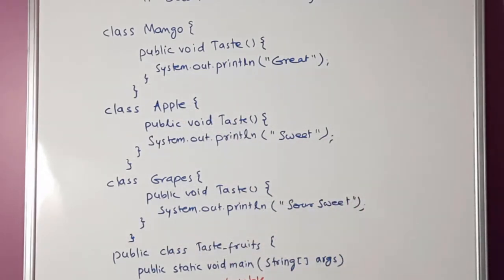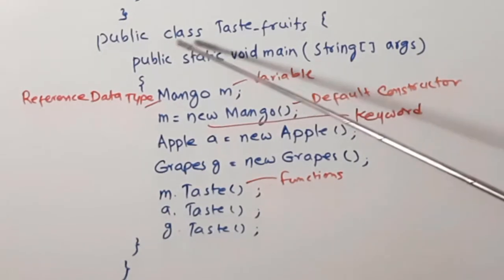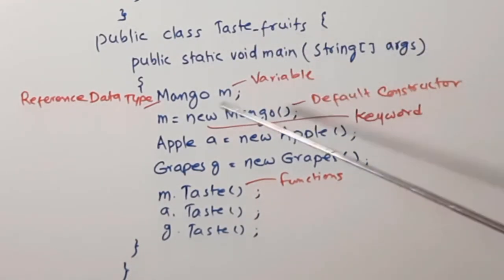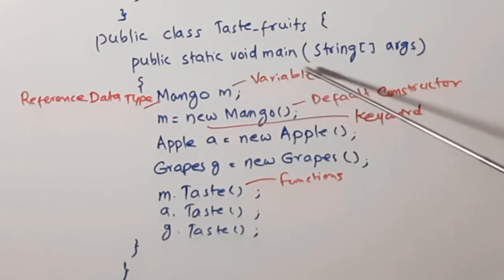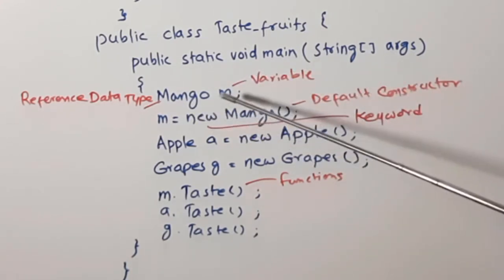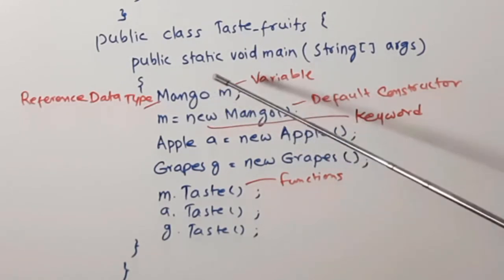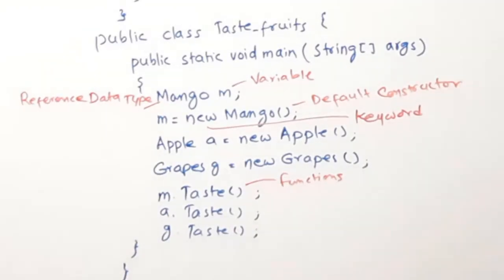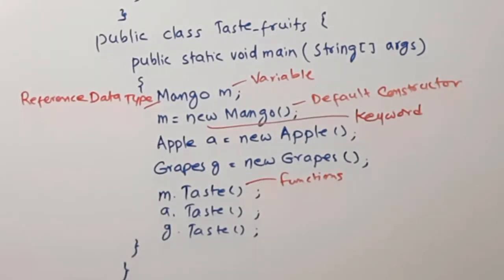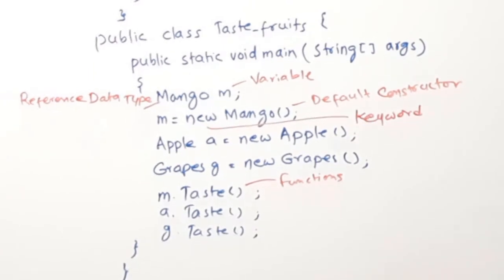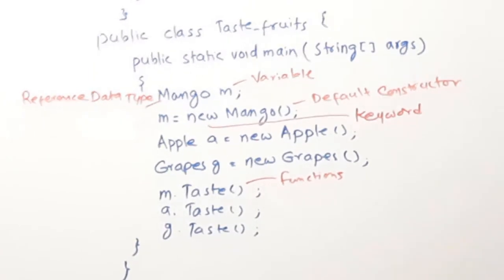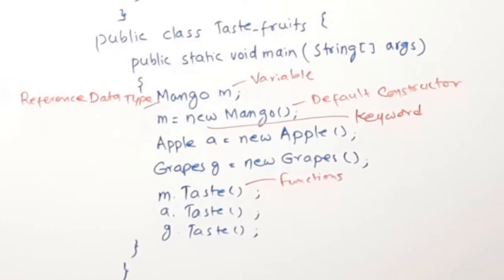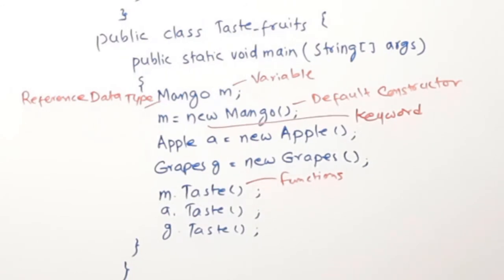After creating three classes, we start with our Public Class TasteFruits with the main method. The first statement is 'Mango m' — this is a variable declaration. If you have learned any other programming language, you know the concept of variable declaration. To store an integer, you create a variable of type integer; to store characters, you create a variable of type character. Here Mango is used as a data type — it is actually the name of a class.